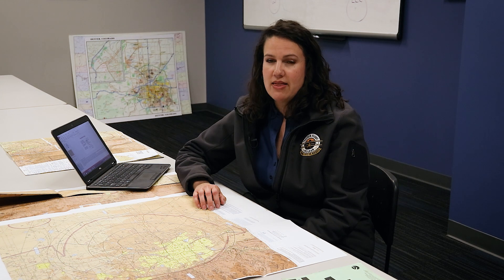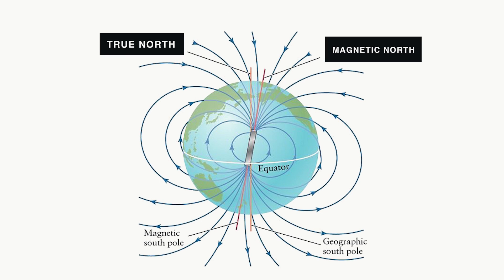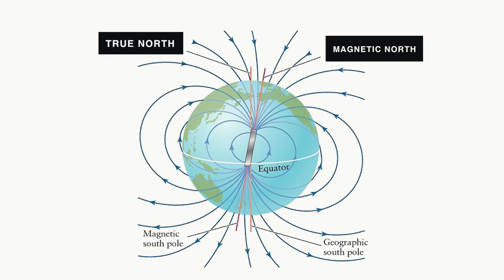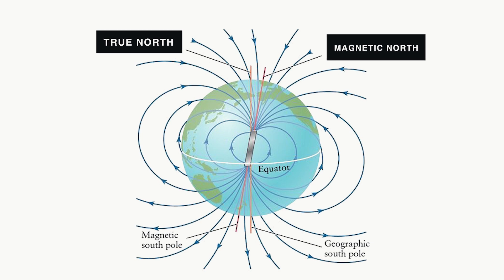What may come as a surprise is that there are two north poles. There is true north, which is a geographical point on the globe where the axis runs from north to south, and there is also magnetic north, which is basically an ore deposit located somewhere around the Arctic Circle.